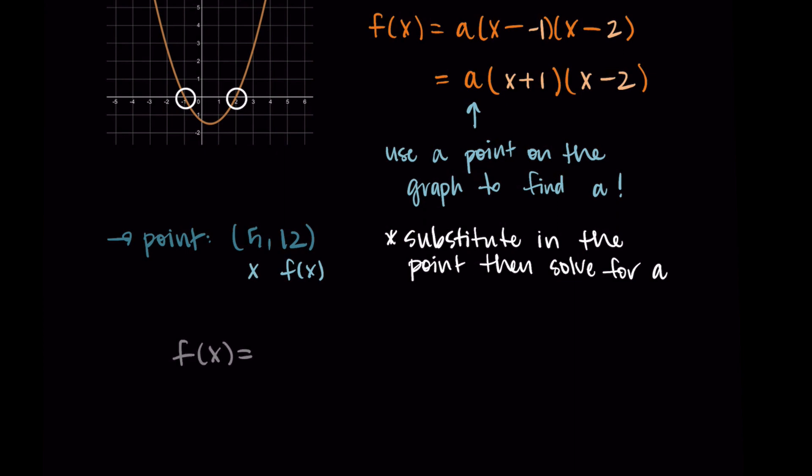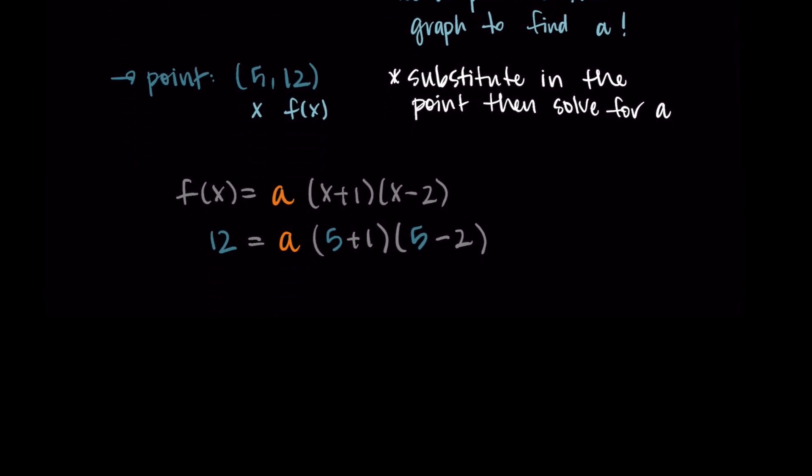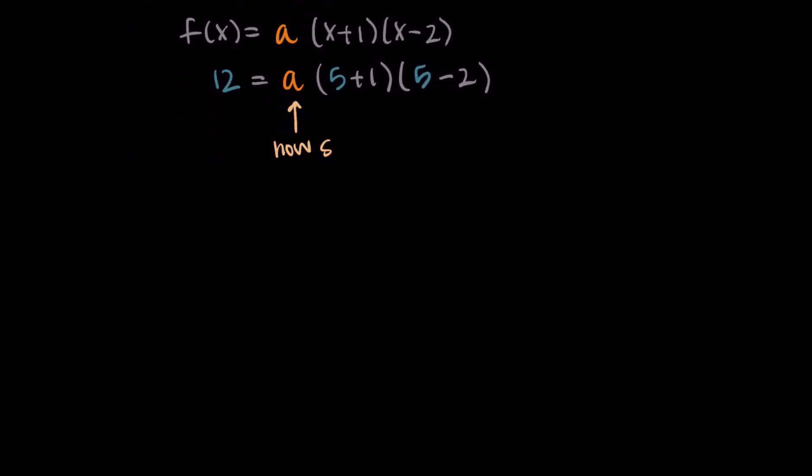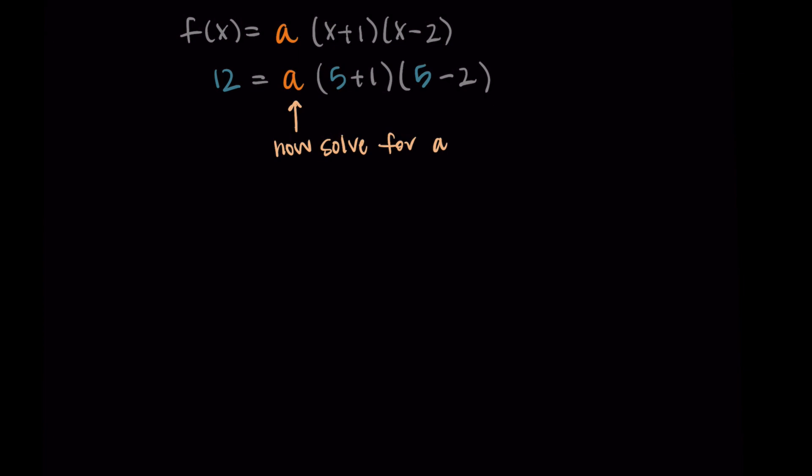So if we start with f(x) = a(x + 1)(x - 2), I'll replace f(x) with 12, I'll leave a alone, and then I have (5 + 1)(5 - 2). Here I'm replacing the x with 5. Now we have an equation that only has one unknown, and so we can solve for a.